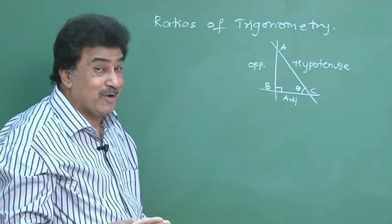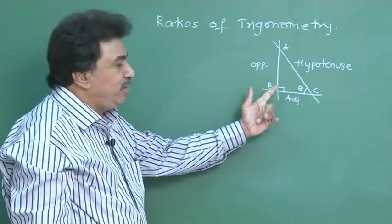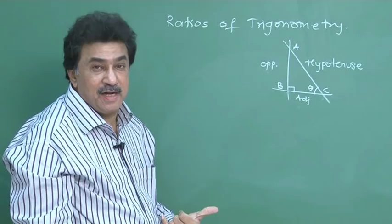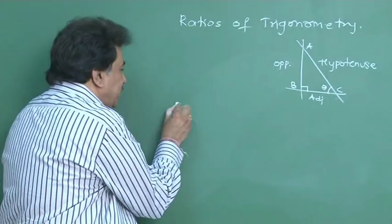Why have I taken a right angle triangle only? Very important question. Because this is the only triangle which has got three sides with three different names: opposite side, adjacent side, and hypotenuse. It's the only triangle with three sides having three different names. To make the study easy and simpler, we use only the right angle triangle for understanding ratios of trigonometry.